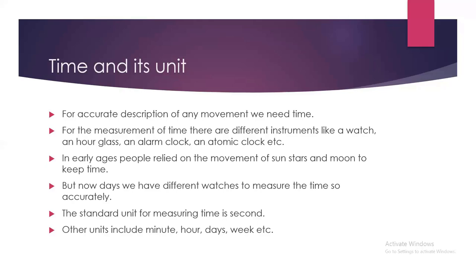Now, the next question is what is the unit of time and how can we measure it? The answer is very simple — with the help of a watch and clock. But before the invention of watch and clock, how did people keep time? In early ages, people used the movement of the sun, stars and moon to keep the time.